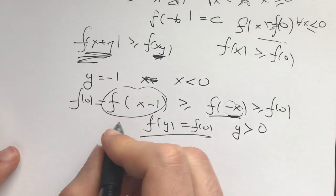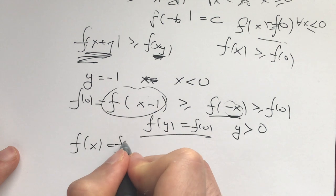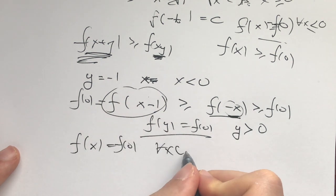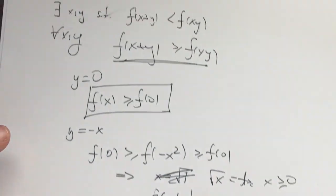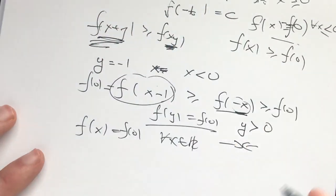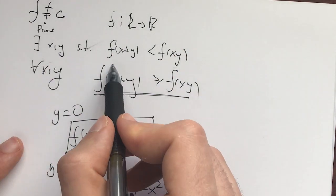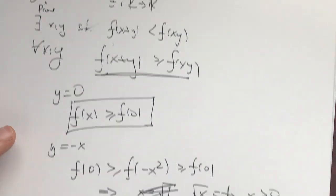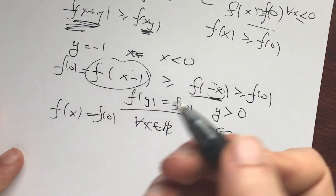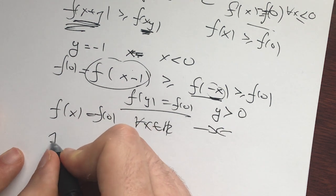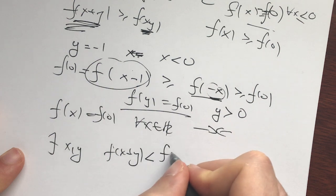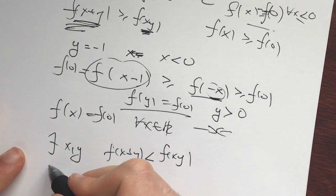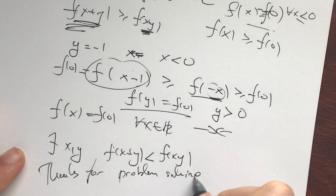And this implies that f(x) is going to equal f(0) for all real numbers x. Which is a contradiction, because we assumed at the beginning that this function is not a constant function. So the initial assumption that there do not exist x and y such that this is true has led us to a contradiction. That means there do exist x and y such that f(x+y) < f(xy). And as always, thanks for problem solving.